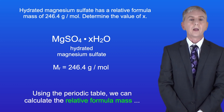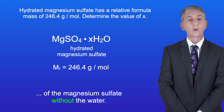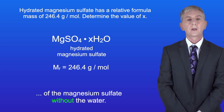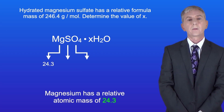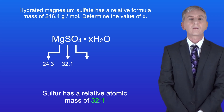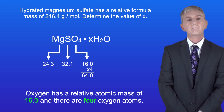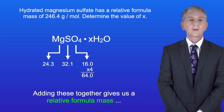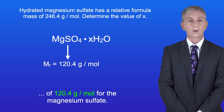Using the periodic table we can calculate the relative formula mass of the magnesium sulfate without the water. Magnesium has a relative atomic mass of 24.3. Sulfur has a relative atomic mass of 32.1. Oxygen has a relative atomic mass of 16.0 and there are four oxygen atoms. Adding these together gives us a relative formula mass of 120.4 grams per mole for the magnesium sulfate.